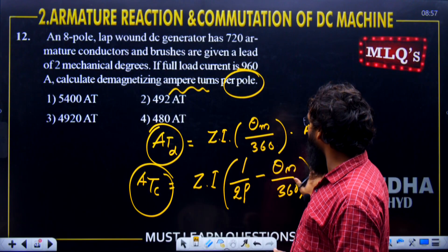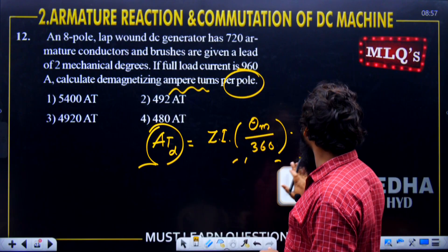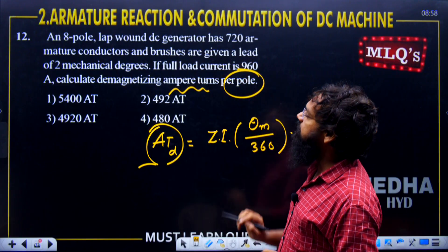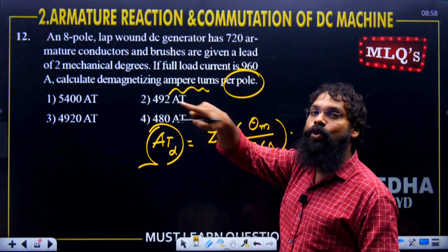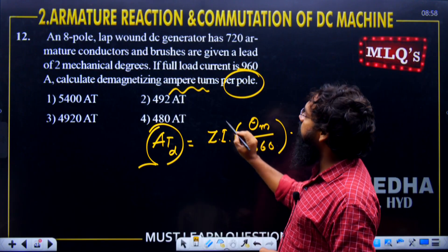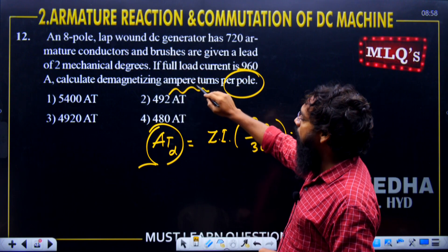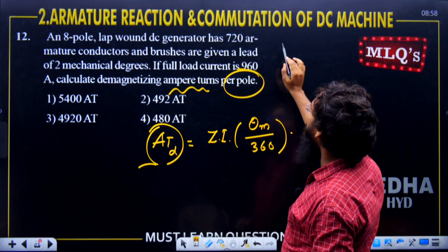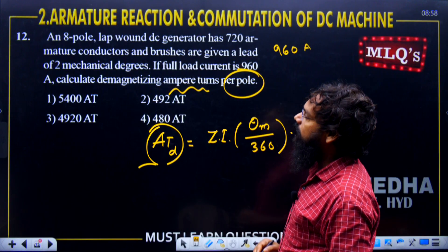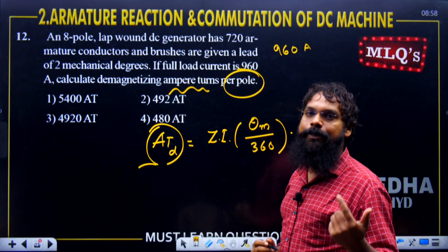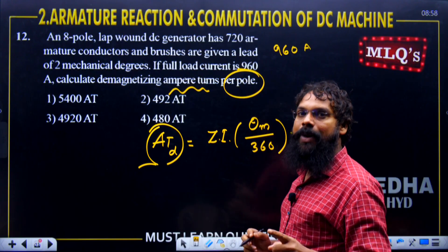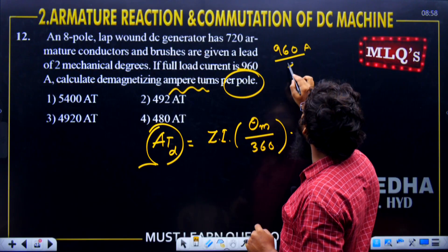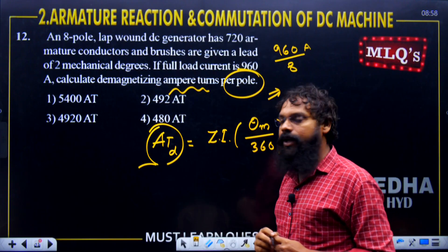Now solving the demagnetizing question: 8 poles, 720 armature conductors, brush lead of 2 mechanical degrees (θ_m = 2), full load current = 960 A. For a lap winding, number of parallel paths equals number of poles = 8. So current per path I = 960 / 8 = 120 A.